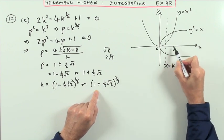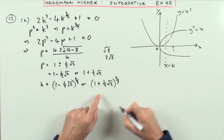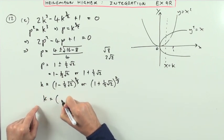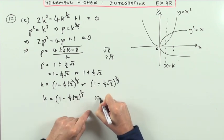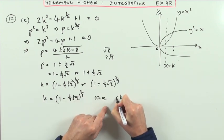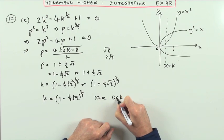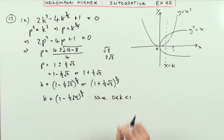And k in this case comes to less than 1, which means that the answer is k equals 1 minus a half root 2 to the power two-thirds, since I know that k has to be greater than 0 and less than 1, so that excludes this one.